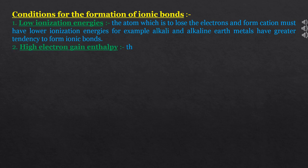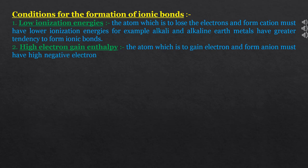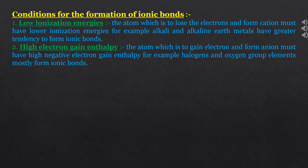Second condition: the atom which is to gain electrons and form an anion must have high negative electron gain enthalpy. For example, halogens and oxygen group elements mostly form ionic bonds because their electron gain enthalpy is highly negative. Higher the value of negative electron gain enthalpy, greater will be the ease of formation of the anion.